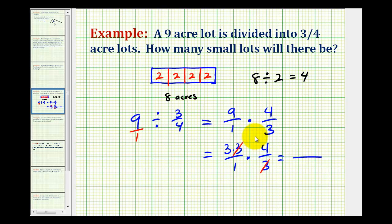Now we can multiply across the numerator. We have three times four, that's twelve. Our denominator is just one, so we have twelve over one or just twelve, which tells us that we have twelve smaller lots. So there are twelve three fourths in nine.